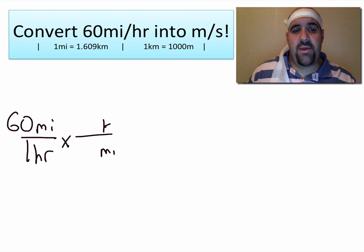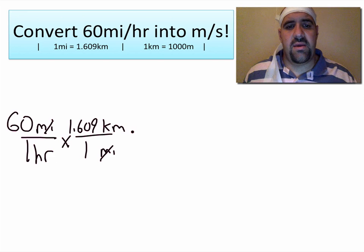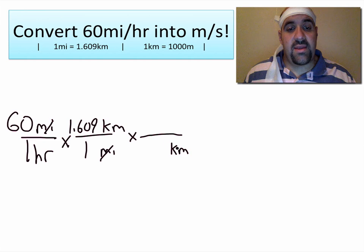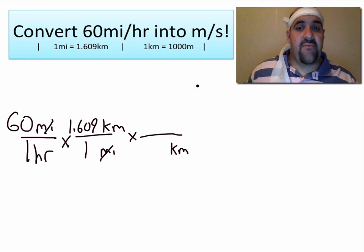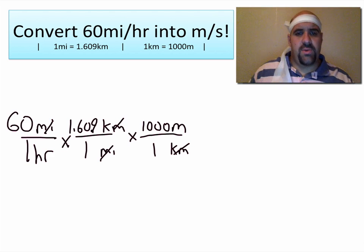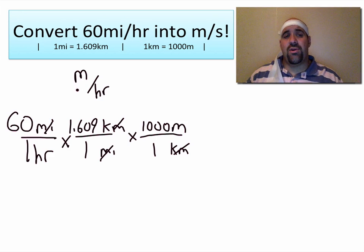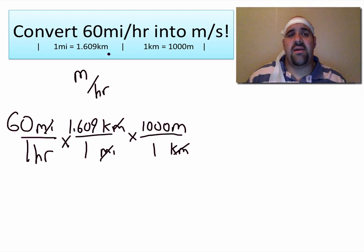I put kilometer on top — one mile is 1.609 kilometers — so these miles cancel and I'm left with kilometers per hour. I need to get rid of kilometers, so I put it on the bottom of the next fraction and go into meters. One kilometer is 1,000 meters; kilometers cancels. Now I'm in units of meters per hour. If I multiplied 60 times 1.609 times 1,000, that would tell me how many meters I travel in one hour at 60 miles per hour.